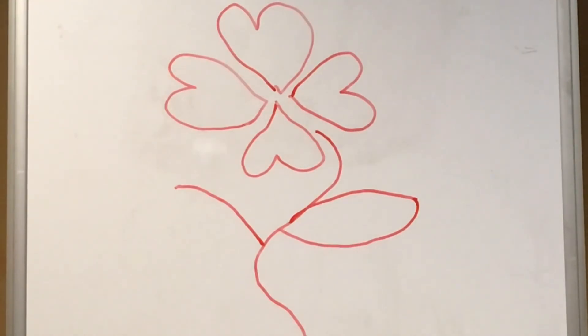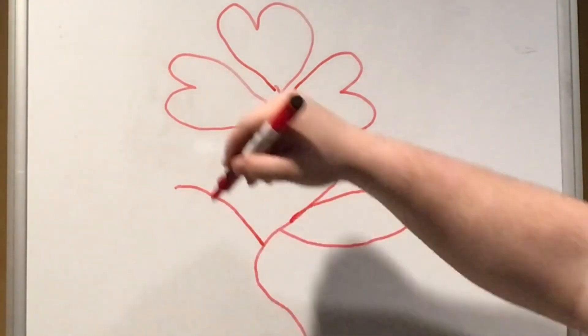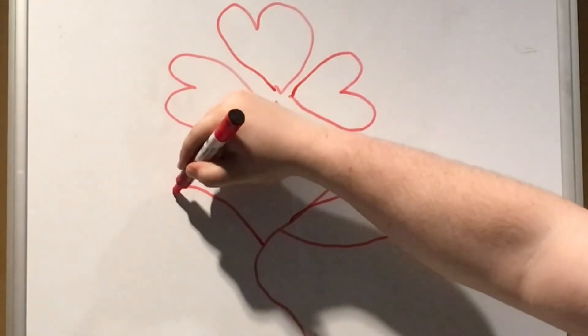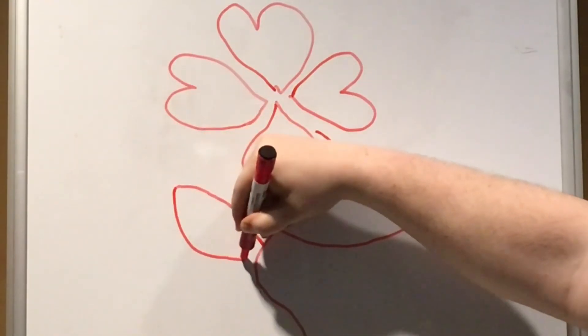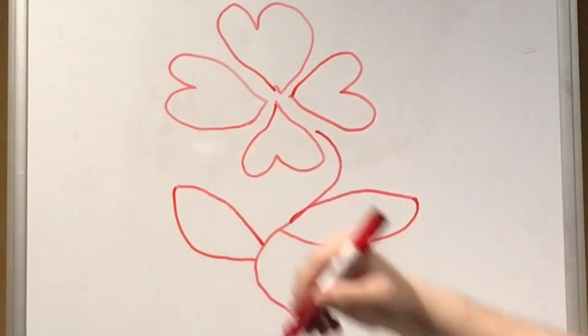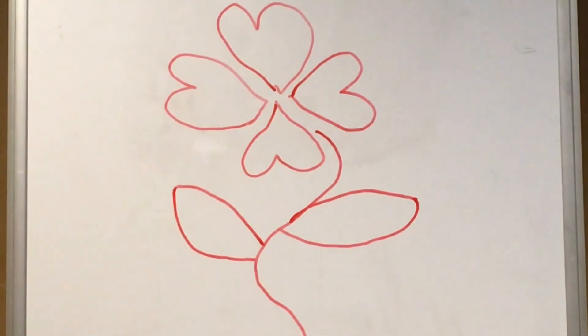He knew his mom would like it too, so Harry ran into the store and then he bought it. What did Harry buy for his mom? That's right, he bought her a four-petaled flower.